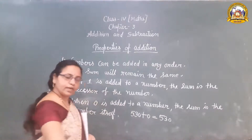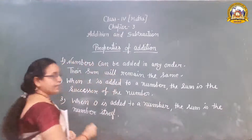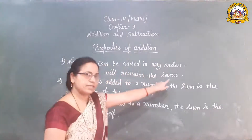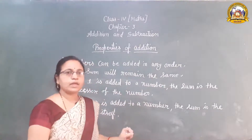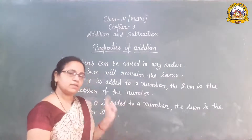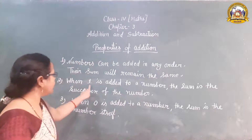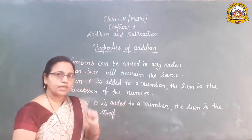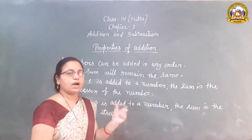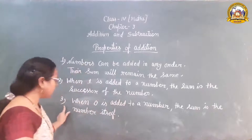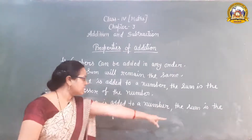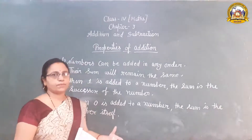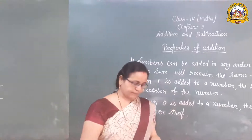Have you understood all three properties of addition? I will repeat all the properties. First: numbers can be added in any order and their sum will remain the same. Second: when 1 is added to a number, the sum is the successor of that number — the after number. Third: when 0 is added to a number, the sum is the number itself. Have you cleared all this?